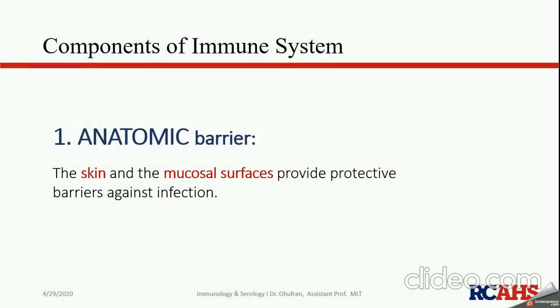The first barrier is the anatomic barrier, which has two sub-components: the skin and the mucosal surface. The skin and mucosal surfaces provide protective barriers against infections.